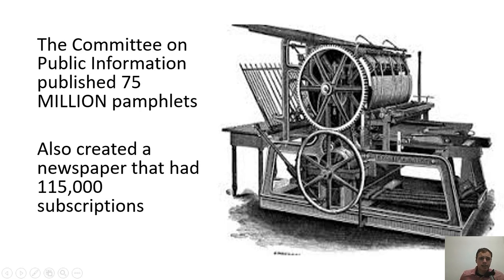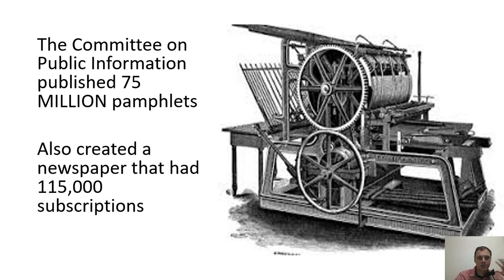The Committee on Public Information published 75 million pamphlets and also created a newspaper that had 115,000 subscriptions. So not only did they have volunteers talking to you, not only did they have artists drawing up posters, but they had writers publishing pamphlets. They were hitting people from all their senses. If they couldn't reach you one way, they were going to reach you another. This was a very large-scale operation — 75 million pamphlets. This was not a drop in the bucket.